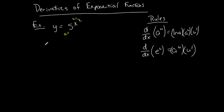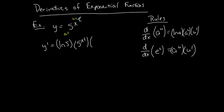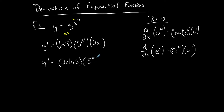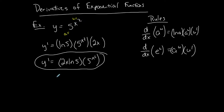To find y prime, it's as simple as ln of 5 times 5 to the x squared, times the derivative of the exponent which is 2x. The only thing you can really do is bring the 2x in front of the ln. Other than that there's not much simplification — this is your first derivative: ln of the base times the function times the derivative of the exponent.